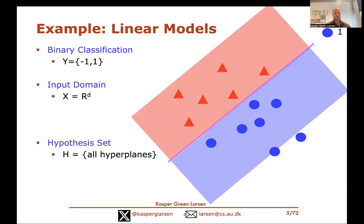For a concrete example hypothesis set: in binary classification with labels minus one and one, if the input domain is R^d, one natural and simple hypothesis set is the set of all hyperplanes. For any given hyperplane in d dimensions, you return plus one on one side and minus one on the other. This is the set of linear models for binary classification.